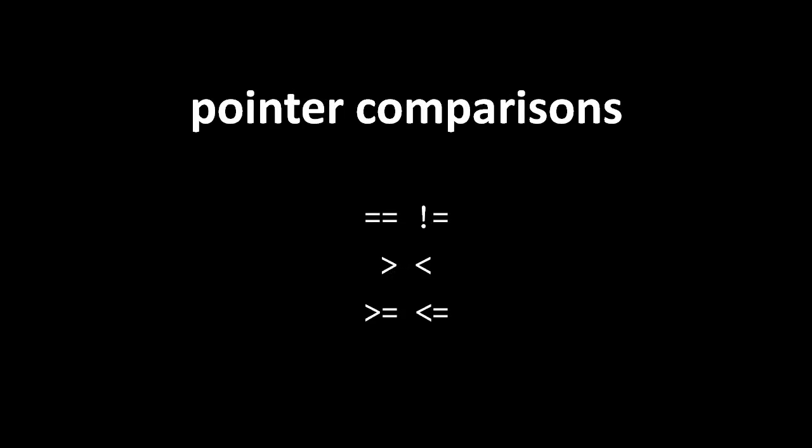Just like with number values, we can compare pointer values with comparison operators. As you would expect, if two pointers represent the same address they will test equal, and if one pointer represents a higher address in memory than another, it is greater than the other.